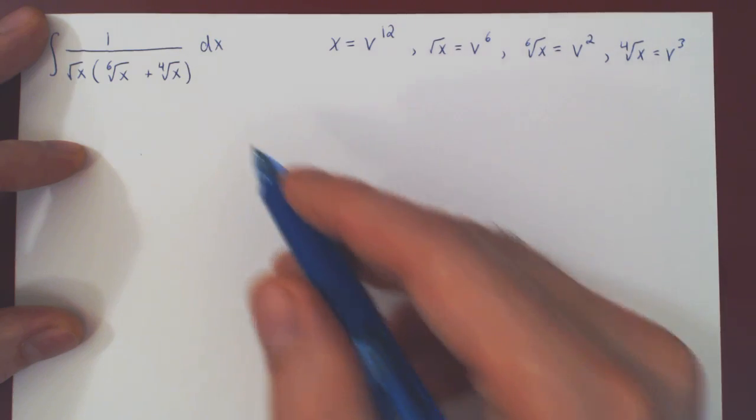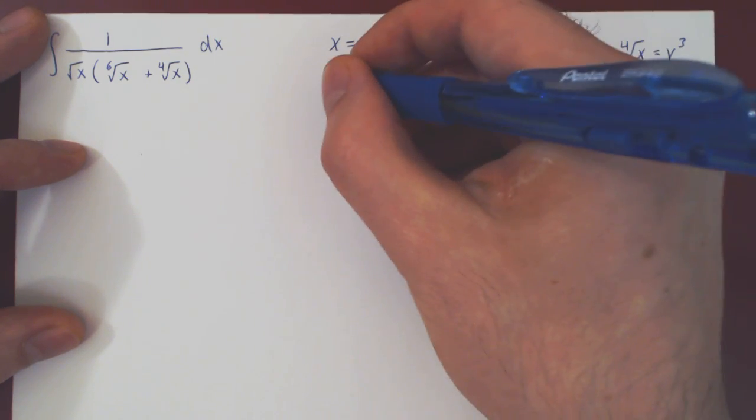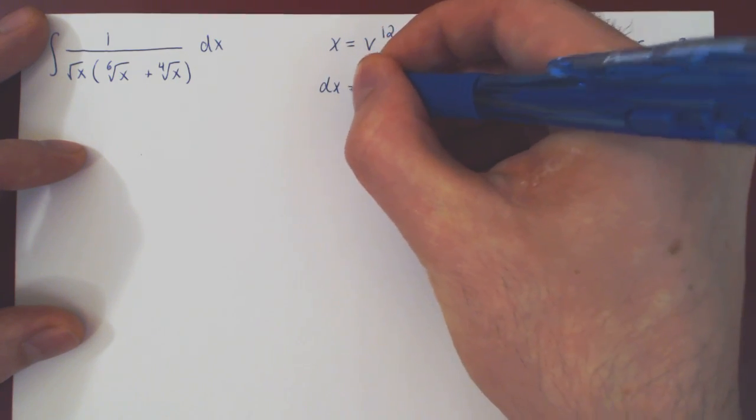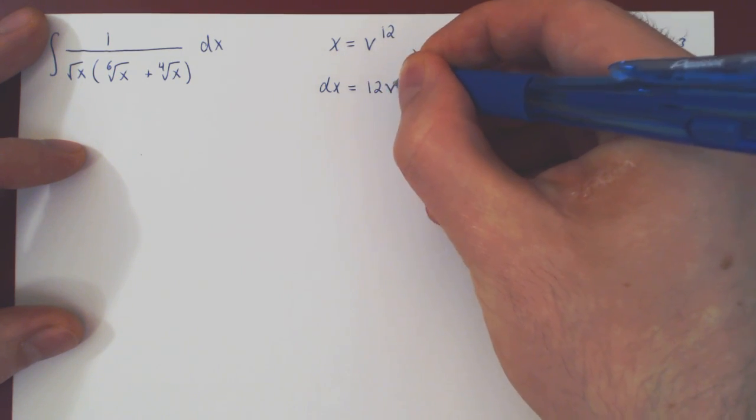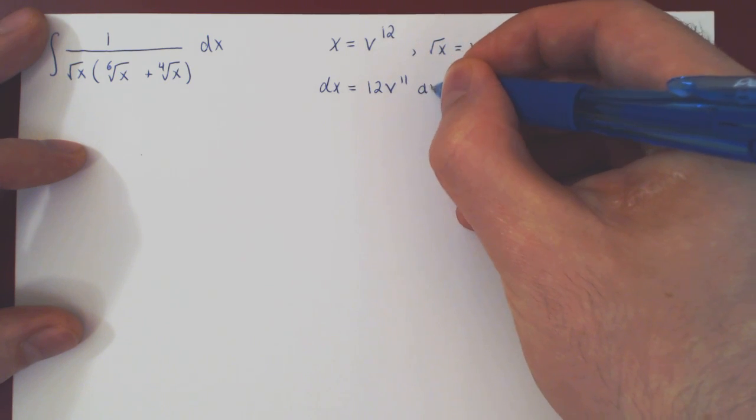All we're missing now is our differential, so dx is, well, the differential of v to the 12 is by the power rule 12 v to the 11 times dv.